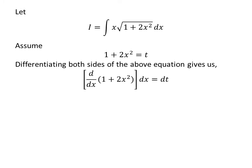Let's find the value of the differential of t. Taking the differential of both sides of the above equation gives us: the derivative of 1 plus 2 times square of x with respect to x, times differential of x, is equal to differential of t. We know the derivative of constant 1 is 0, and the derivative of 2 times square of x is 4 times x. So 4 times x times differential of x is equal to differential of t.